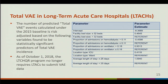Here is the model for total VAE for long-term acute care facilities, calculated under the 2015 baseline. The intercept value is negative 8.3689. Then we have facility bed size with the referent value being less than 32 beds, proportion of admissions on hemodialysis with a referent value less than or equal to 0.11, proportion of admissions on a ventilator with a referent value less than 0.18, location type ICU or ward, and average length of stay. As of October 1st, 2018, the LTCH QR program is no longer requiring LTCHs to submit VAE data, but your state may have different requirements, so check with your HEI coordinator.